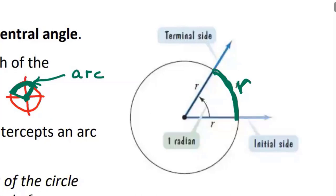One radian because it faces one radius worth of arc. And believe it or not, that's consistent regardless of which size circle you're talking about. You'll get the same size angle if you look at the angle that sweeps out one radius worth of the arc.